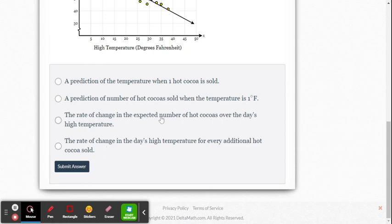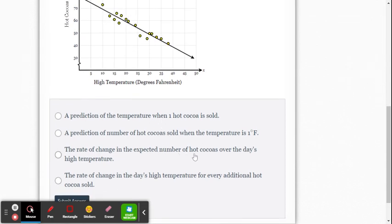Now it's going to be the rate of change is going to be the number of hot cocoa sold, the change in the number of hot cocoa sold over as you raise the temperature one degree.